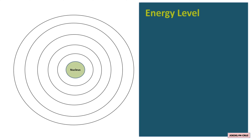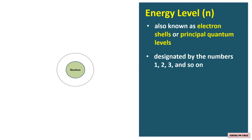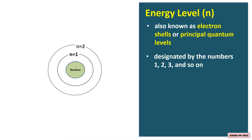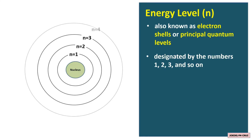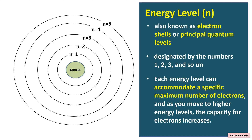An atom has different energy levels which are represented by the symbol N. The energy levels are also known as electron shells or principal quantum levels. These energy levels are designated by the numbers 1, 2, 3, and so on. In an atom, this is the first energy level or N equals 1, the second, 3rd, 4th, and 5th. Each energy level can accommodate a specific maximum number of electrons, and as you move to higher energy levels, the capacity for electrons increases.